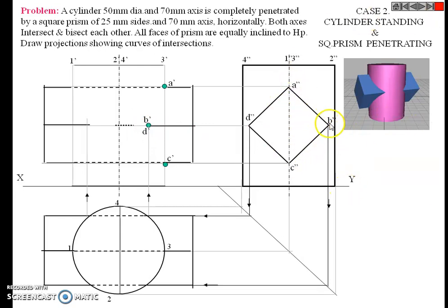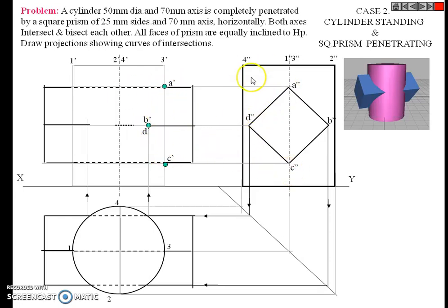Point a double dash is visible. So a double dash, b double dash, and c dash — and this a dash, d dash, c dash — are invisible, that is the back side. So both the visible line and the invisible line overlap each other in this problem.